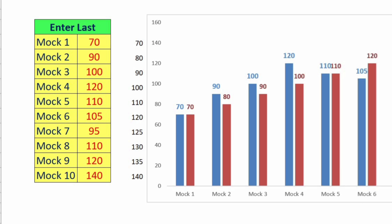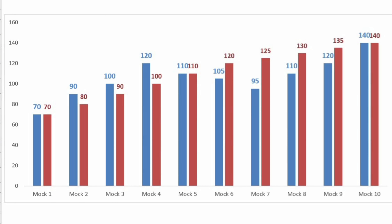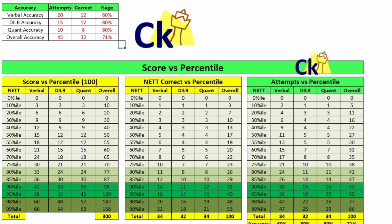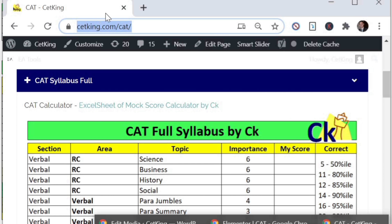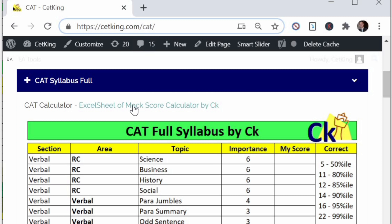I am adding more columns — a target plan. You post your target score, your last five or six mocks, and your target, and it will tell you when and how to achieve the target. I am working on that, and I will upload the mock transition video separately. If you have not subscribed, do subscribe to the channel because I am going to upload more videos like this. In case you want to join the program, you can call on the numbers given in the description box. Please download this table from cetking.com/cat, first link. All right, all the best.